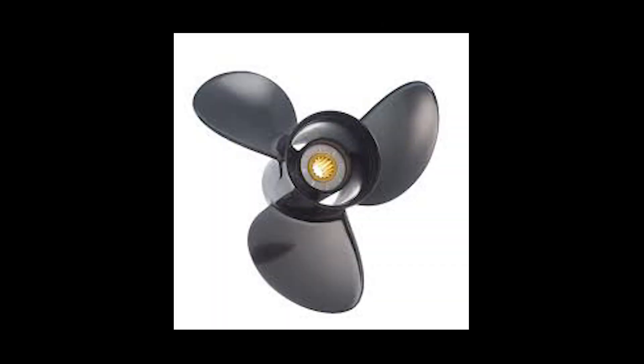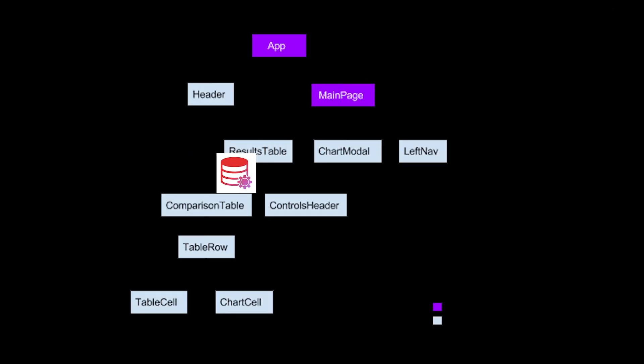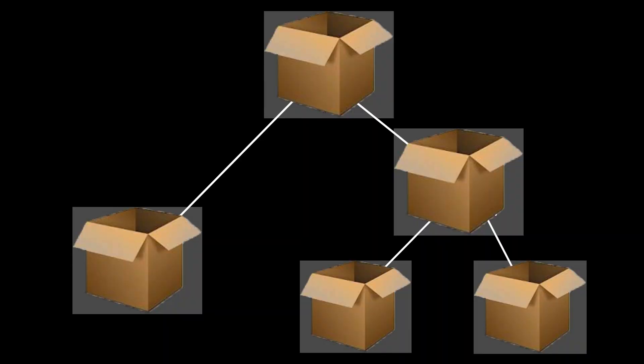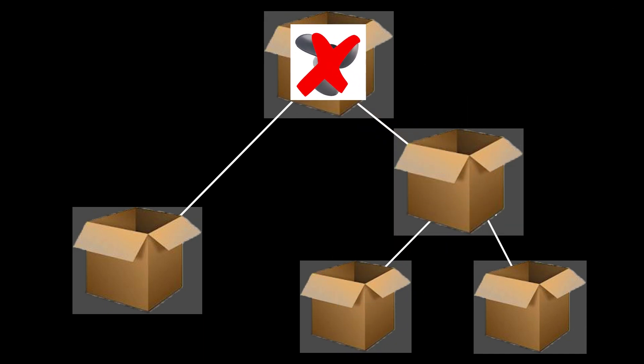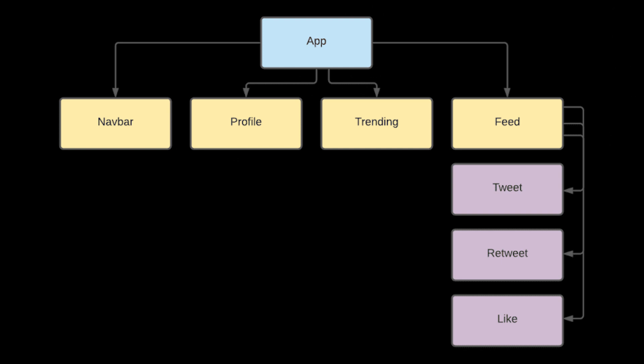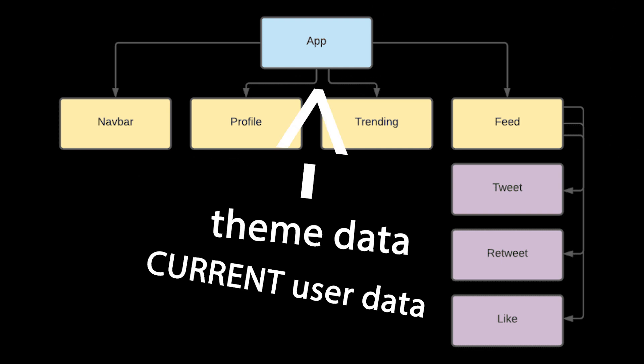There's only one thing better than state, and that's props. Props, or properties, are a way to pass data through your component structure to other components that need it. React uses a component tree, and the programmer can only pass props down the tree — never up — unless you use a state management technology like Redux. You would want to hold the most global information at the top in your app component, such as themes or the current user's data.